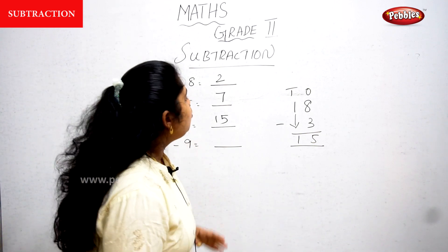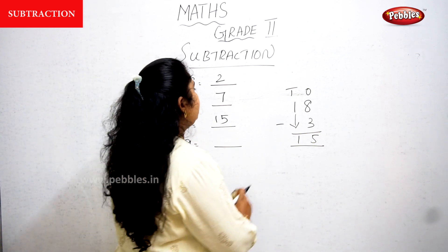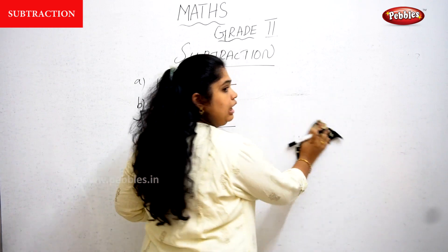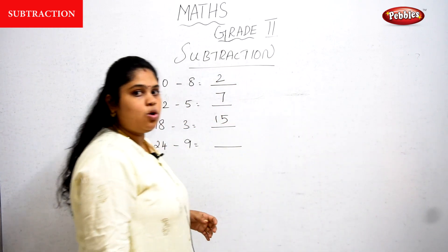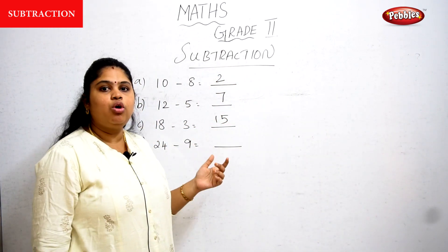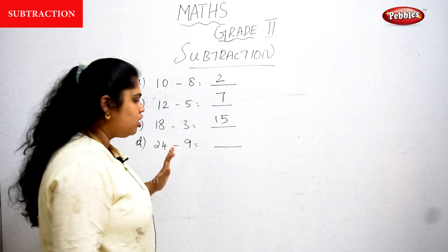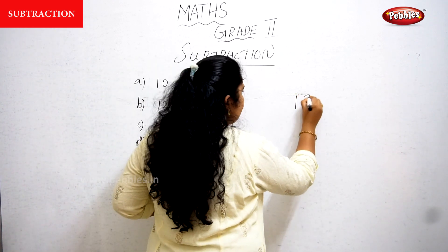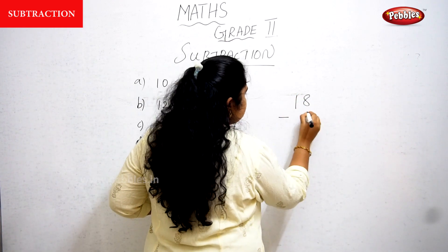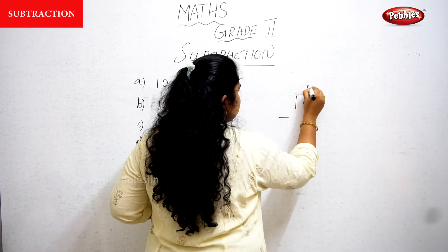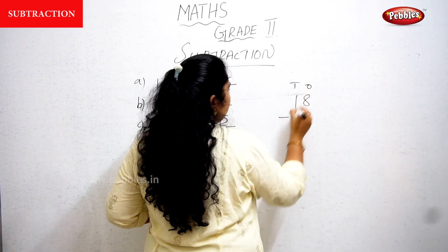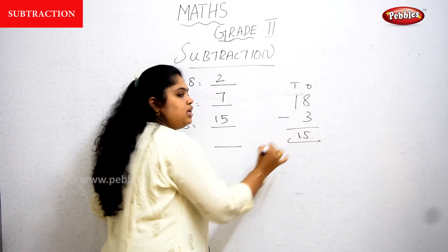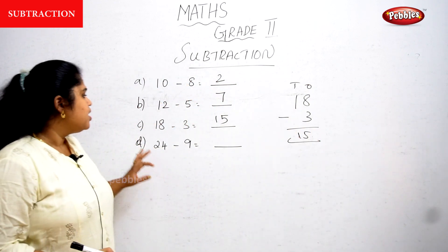Remember where to write the 3 is important — don't write it in the tens column. You should write the 3 in the ones column. So 18 minus 3 gives 15.